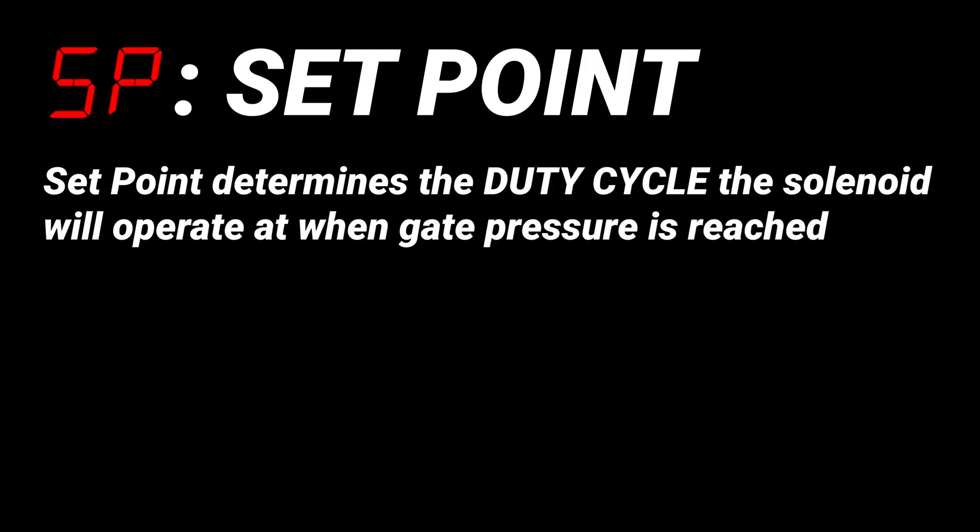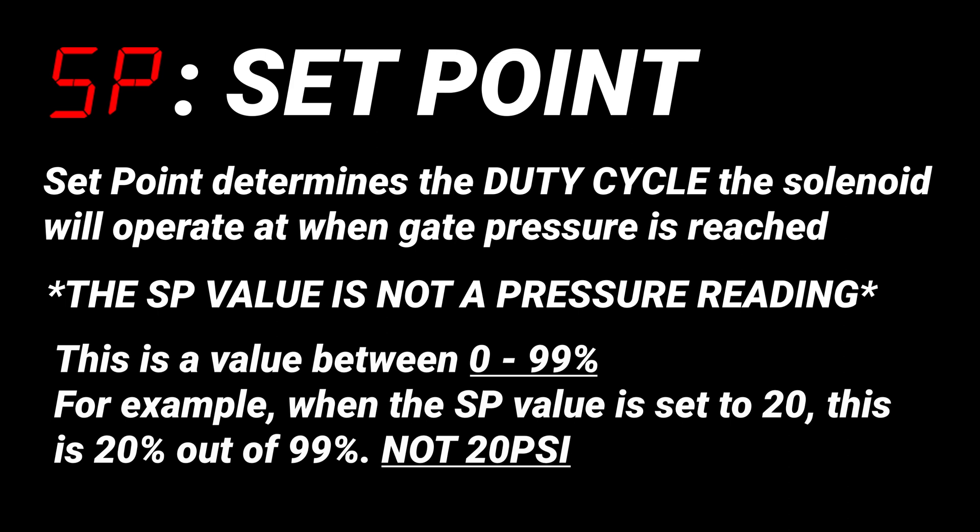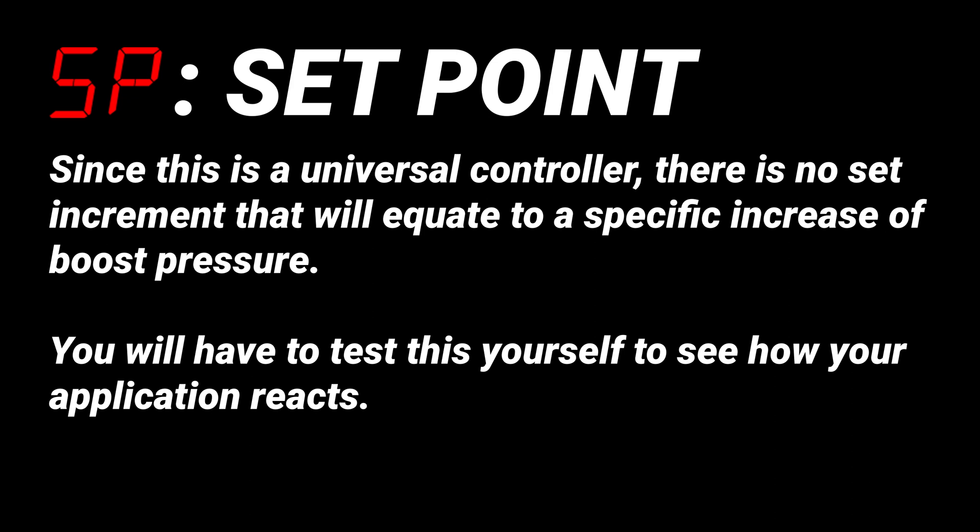SP stands for set point. The set point value determines the duty cycle the solenoid will operate at when the gate pressure is reached. The SP value is not a pressure reading — it is a value between 0 to 99 percent. For example, when the SP value is set to 20, this is 20 percent of 99 percent, not 20 psi. The larger the value the more boost the turbocharger will produce. Since this is a universal controller there is no set increment that will equate to a specific increase of boost pressure, so you will have to set this yourself to see how your application reacts.